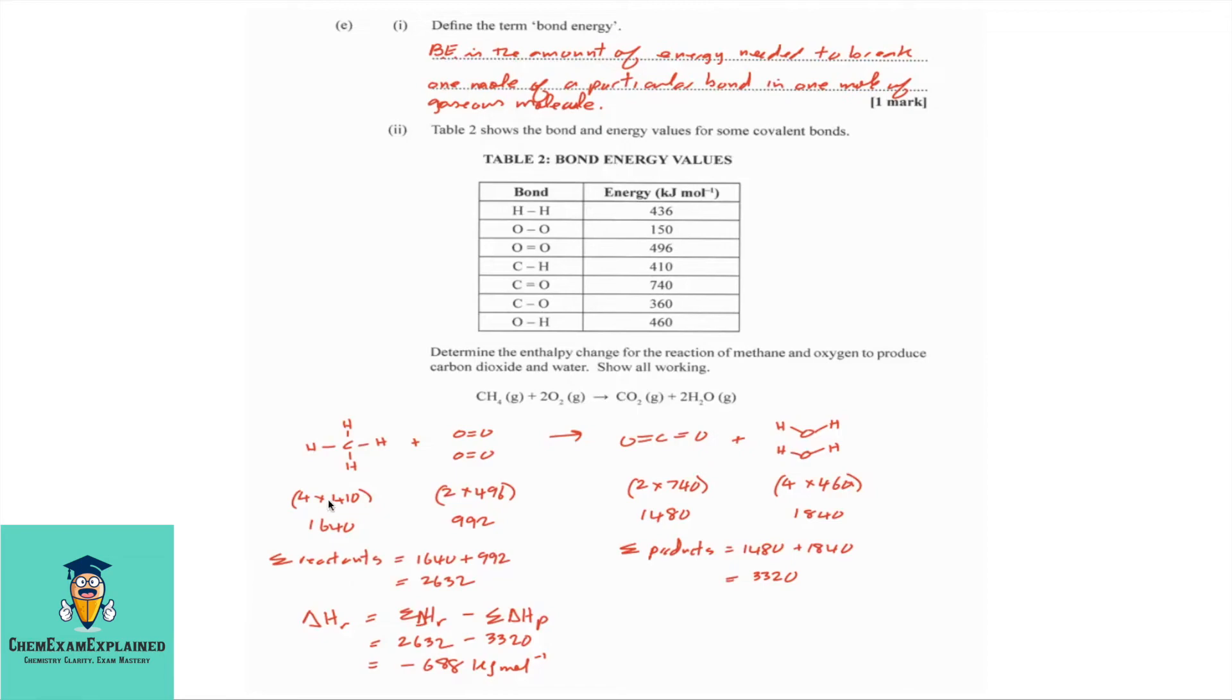Let's go through and work out our values. Four times the CH bonds is four times 410, which is 1640. The two OO double bond is two times 496, which gives us 992. The two carbon to oxygen double bond is two times 740, which is 1480. If you sum up all the energies for the reactant, you end up with 2632. And if you sum the products, you get 3320.